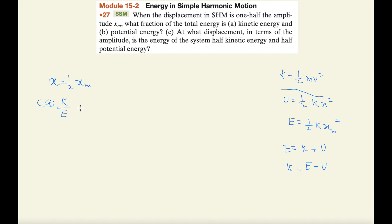Here we have to find K upon E. Since K is equal to E minus U, we can write K over E as equal to (E minus U) divided by E, which simplifies to E/E minus U/E. Since E/E equals 1, we can write this as 1 minus U divided by E.